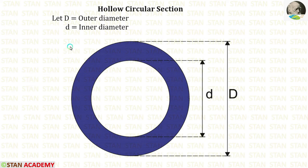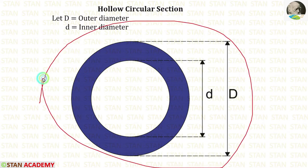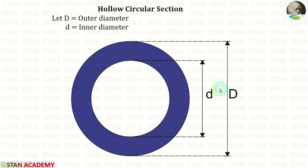Hello everyone, today we are going to find the shape factor for a hollow circular section. Let us consider a hollow circular section. In this circle, caps D is the outer diameter and small d is the inner diameter.